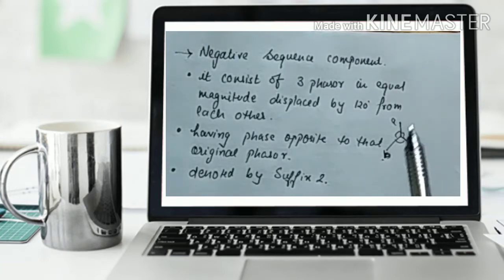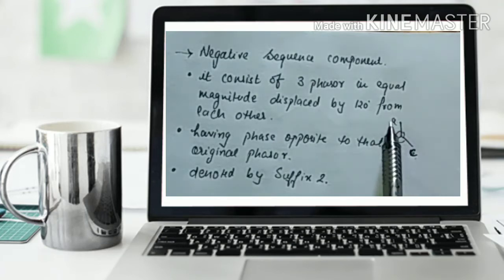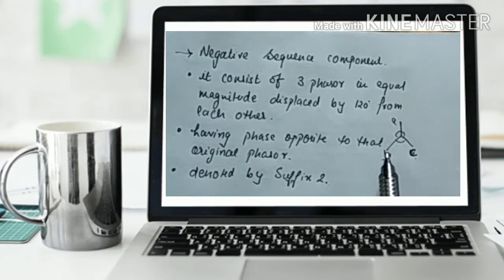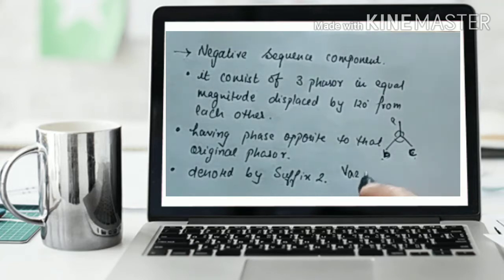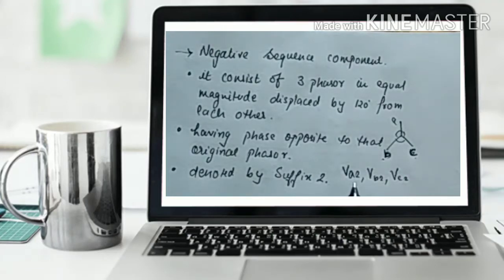Negative sequence component consists of three phasors of equal magnitude with a phase displacement of 120 degrees, but having opposite phase sequence — instead of ABC we have ACB. It is denoted by suffix 2, meaning Va2, Vb2 and Vc2. For positive sequence we write Va1, Vb1 and Vc1, while for negative sequence we write Va2, Vb2 and Vc2.